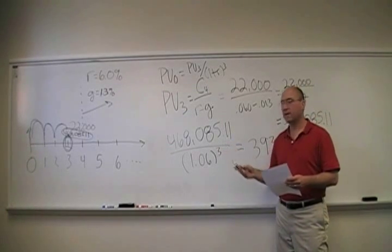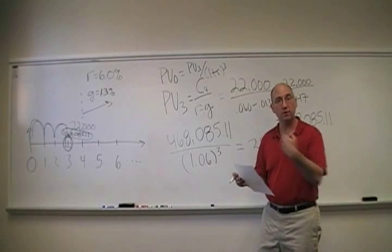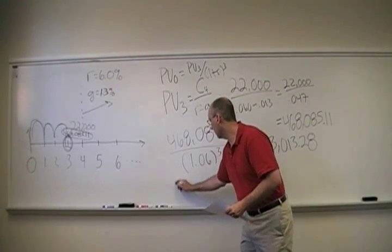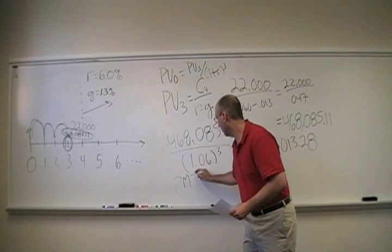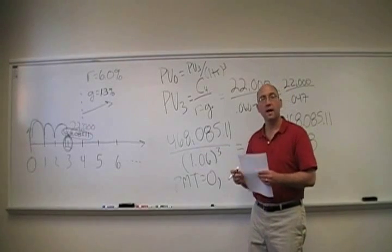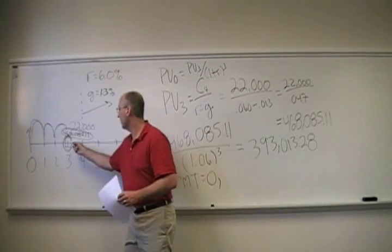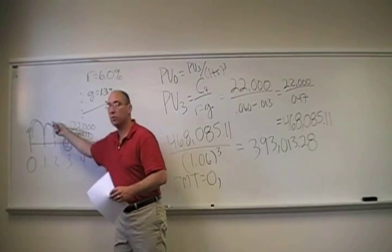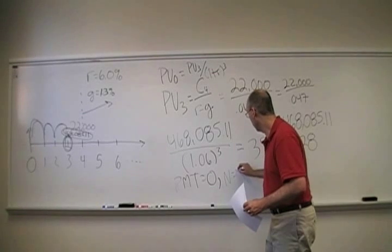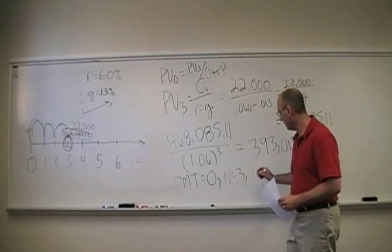If you wanted to use this step in a financial calculator, you would have said, it wouldn't matter if you were in end or begin mode because there's no payments, so you can set payment equal to zero. What's N? N is equal to three because your value is as of this point in time, so you're taking about one, two, three periods. I percent is six, the discount rate.